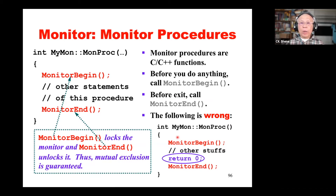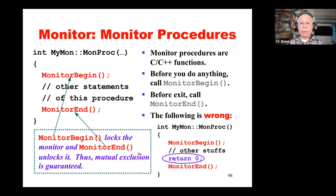Here is a wrong way to write something. We have monitor_begin with no statement before it, then we do something and return zero. Why is it wrong? If you execute return zero, the control goes back and you have the baton representing the monitor, and then you return. The control goes back to the caller immediately. The caller does not call monitor_end to release the baton. So even though you returned, you still have the baton and nobody can enter the monitor.